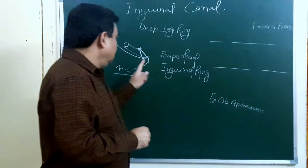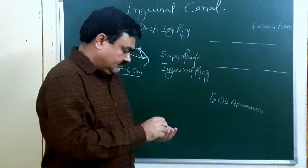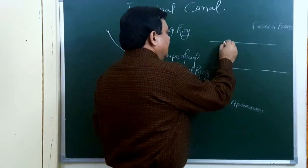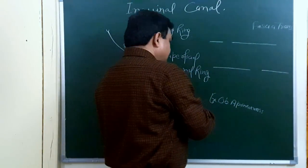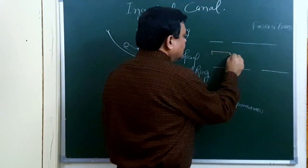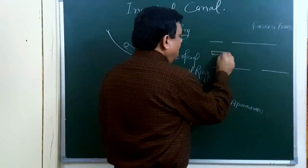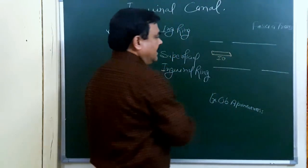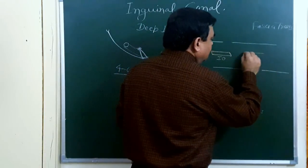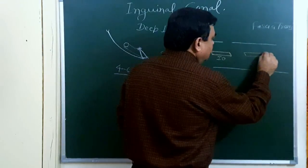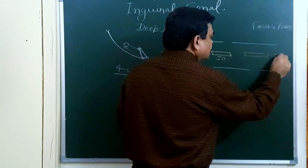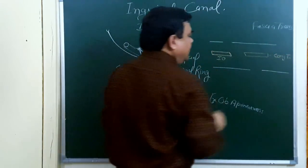The superficial inguinal ring is triangular in shape, while the deep inguinal ring is oval or circular. The structure present here is the internal oblique muscle, and here is the conjoint tendon.